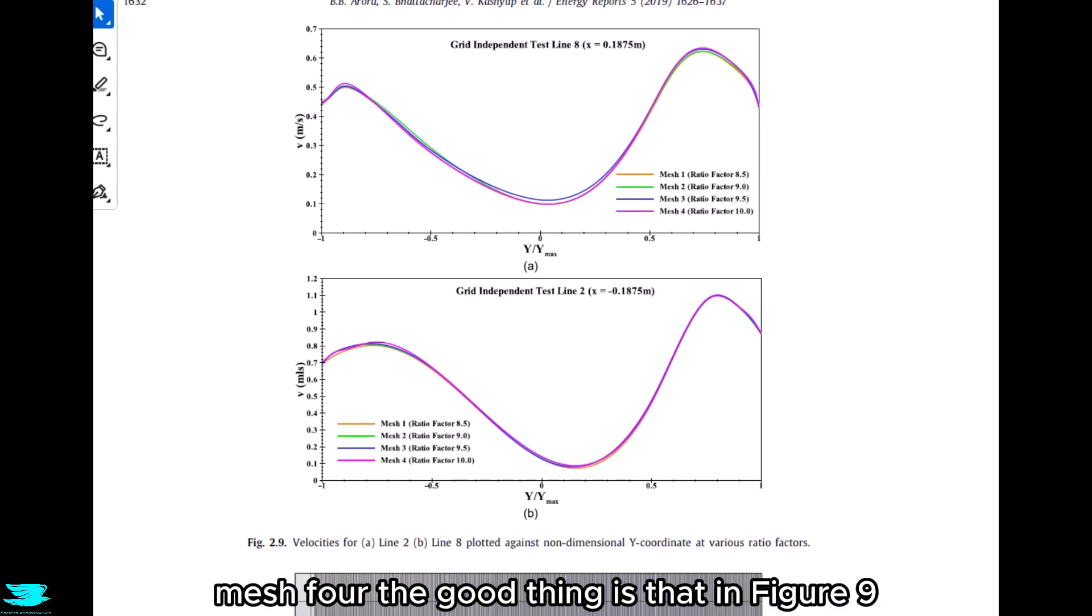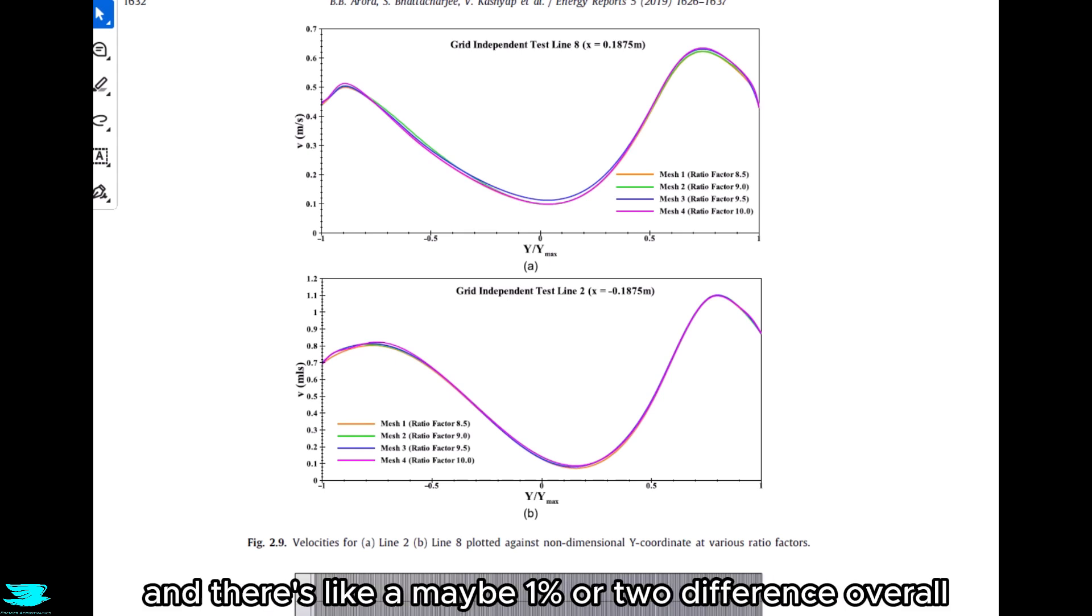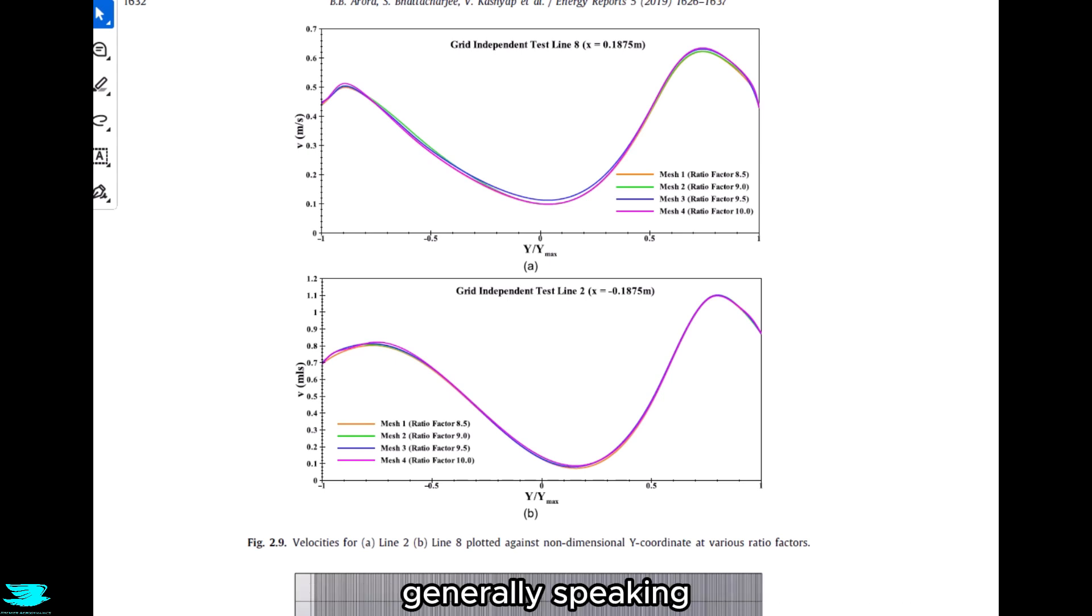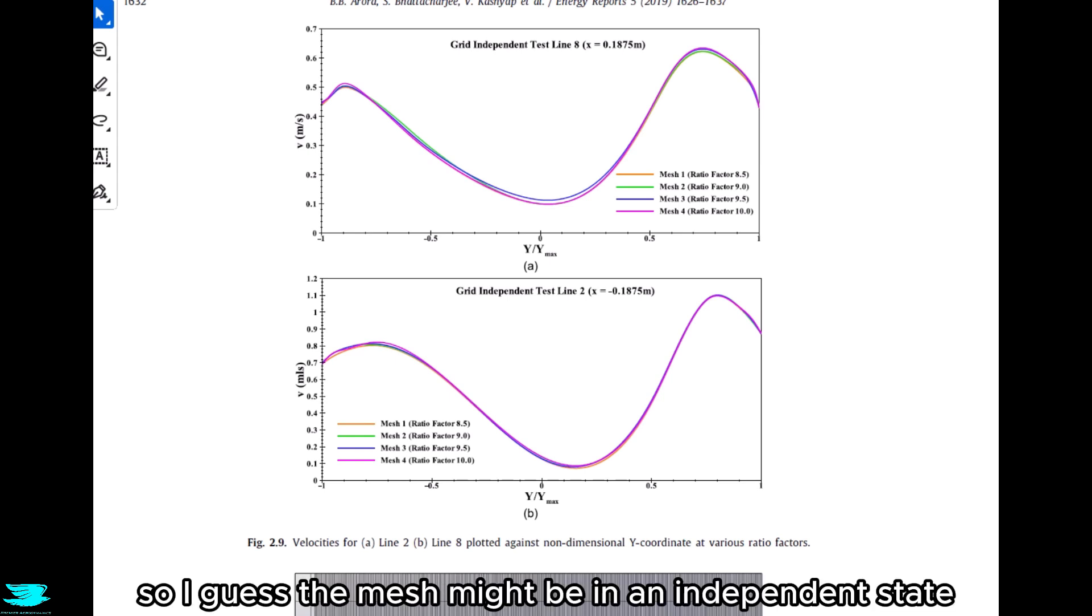The good thing is that in figure 2.9, the mesh results are all pretty much the same. There are small differences here and there, but overall they follow the same trends, and there's maybe a percent or two difference overall, generally speaking. So I guess the mesh might be in an independent state so far.